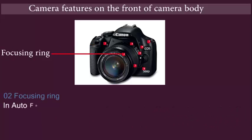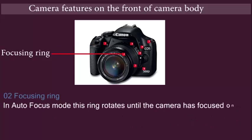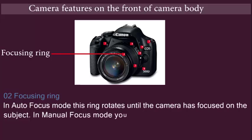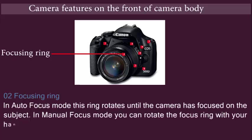Focusing ring: In auto focus mode, this ring rotates until the camera has focused on the subject. In manual focus mode, you can rotate the focus ring with your hand to focus on a specific subject.